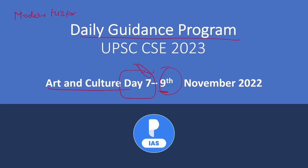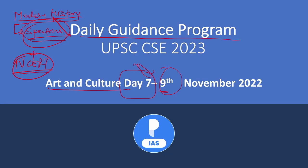Modern history will be our next subject. Our main source will be the Spectrum, plus some NCERT — specifically 'Our Pasts Part 3' and 'Themes in Indian History Part 3'. So the two sources will be 'Brief History of Modern India' by Spectrum and the NCERTs.